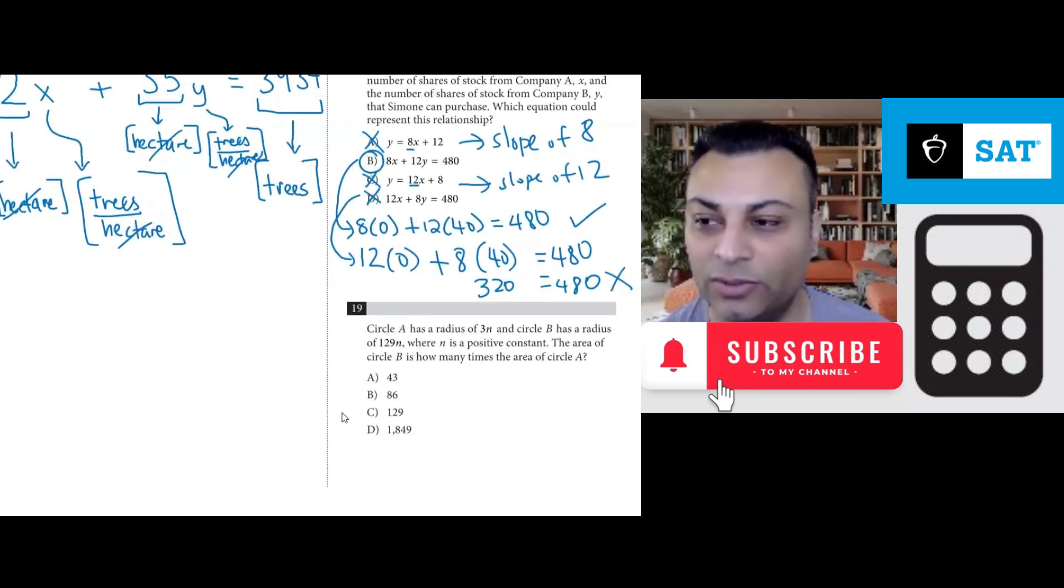We would like to know the area of circle B is how many times the area of circle A. We would like to know this ratio, area of circle B over area of circle A. It's pi radius squared over pi radius squared.